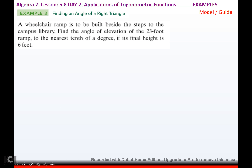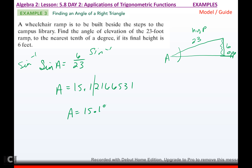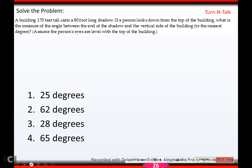A wheelchair ramp is built beside steps to a campus library. Find the angle of elevation of the 23-foot ramp to the nearest tenth of a degree if its final height is 6 feet. From that angle, opposite is 6 and hypotenuse is 23, so we set up sine again: sin(A) equals 6 over 23. Use arcsin to get A equals 15.12 degrees. To the nearest tenth of a degree, that angle is 15.1 degrees.